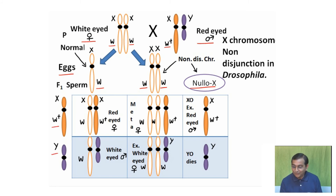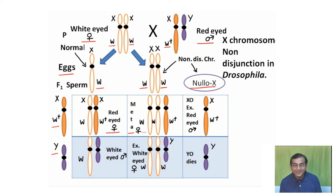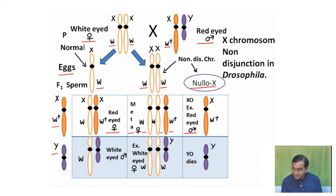When these were fertilized, in the F1 generation Bridges obtained: normal red-eyed females (X^W+ X^W); a meta-female or super-female with three X chromosomes (X^W X^W X^W+); an exceptional red-eyed male with XXY chromosomal constitution; a white-eyed male; an exceptional white-eyed female with XXY chromosomal constitution; and a YO male.